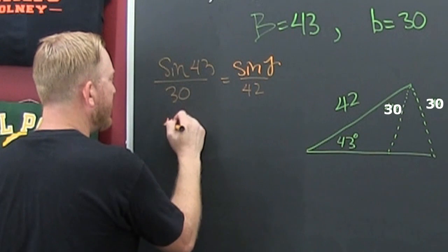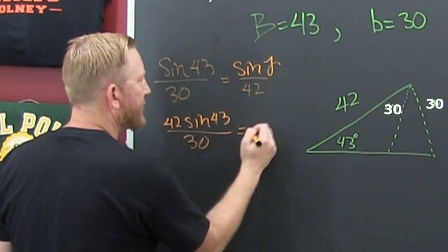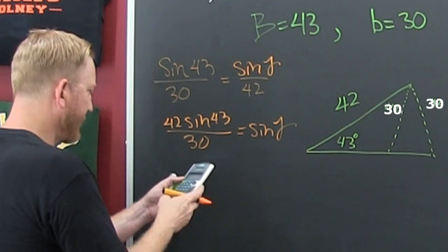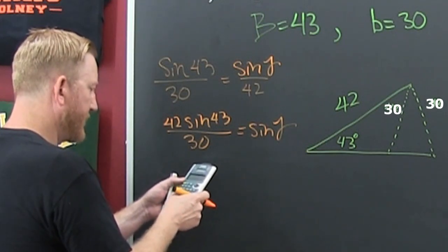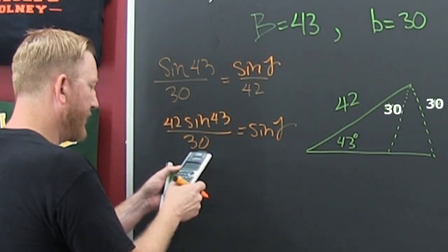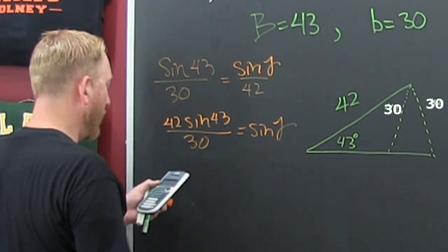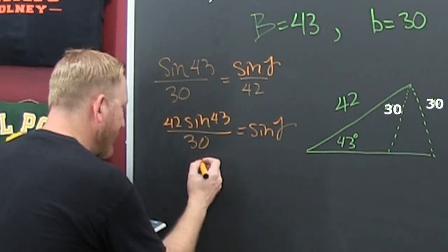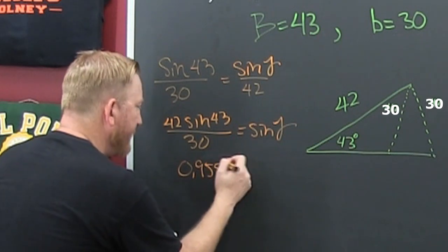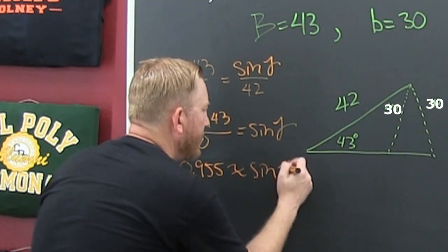So that's 42 sine 43 divided by 30. That's going to be the sine of... All right. So here we go. That's 42 times the sine of 43, and then we're going to divide it by 30. We're not done. That's close to one though. Heavens to Mercatroy. So that's 9, 5, 5-ish. I rounded it right there.